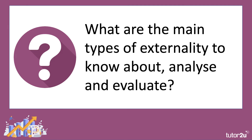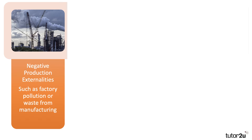There are four main types of externality to know about. The first is a negative production externality — these are external costs arising from production. Classic examples include factory air pollution, noise pollution from a manufacturing plant, or a factory that emits waste into rivers and tributaries from a manufacturing process.